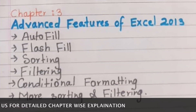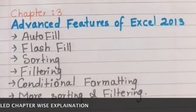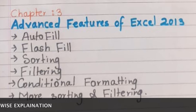Chapter 3 is Advanced Features of Excel 2013. Topics include Autofill, Flash Fill, Sorting, Filtering, Conditional Formatting, and more sorting and filtering features.